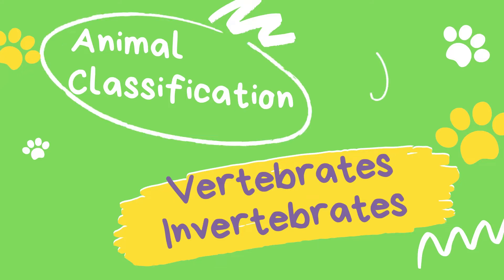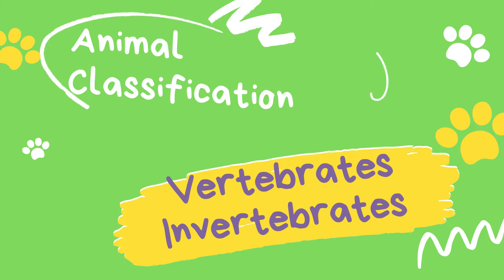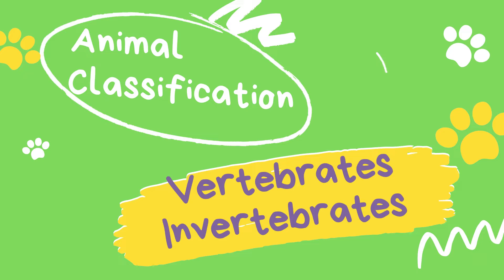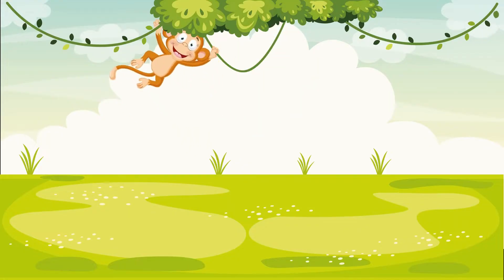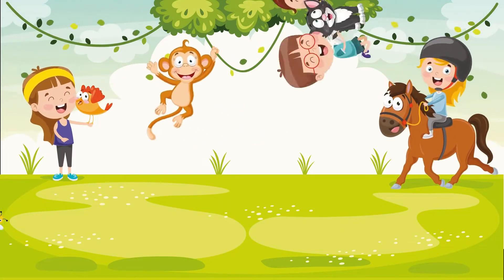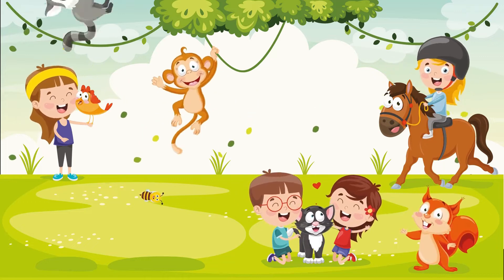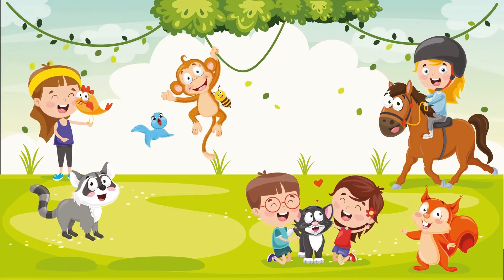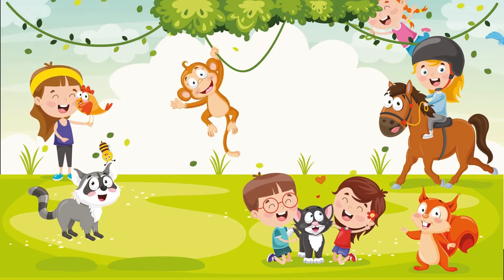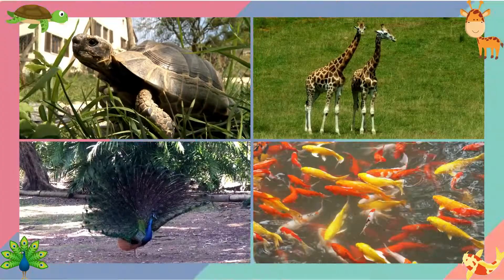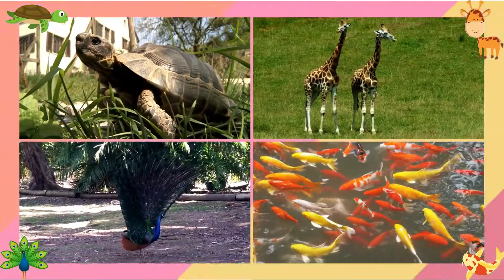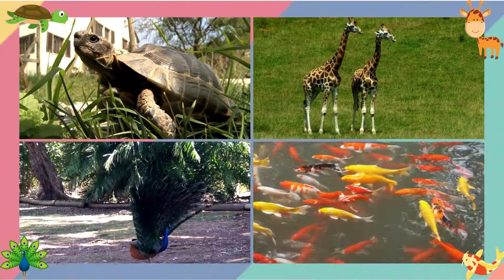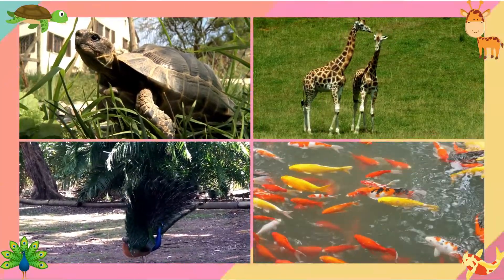Today we are going to learn about the classification of animals, which are vertebrates and invertebrates. Kids like me are amused by animals and often have a particular favorite animal. Millions of different kinds of animals live on Earth.